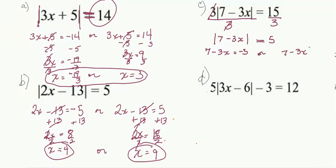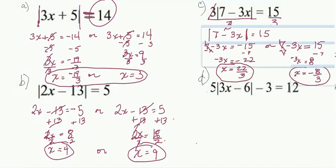Pause your video and solve it yourself. Your solutions should be 22 thirds and negative 8 thirds. I like to leave fractions in improper fraction form, fully reduced. You can't reduce 22 thirds — 3 and 22 have no common factors. Neither do 8 and 3. I prefer reduced improper fraction form for these answers.